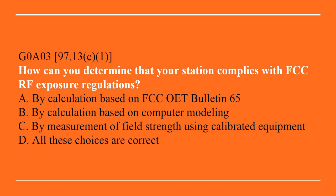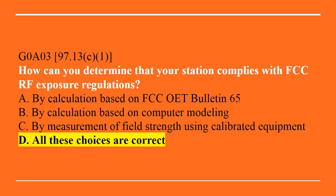G0A03: How can you determine that your station complies with FCC RF exposure regulations? A, by calculation based on FCC OET Bulletin 65. B, by calculation based on computer modeling. C, by measurement of field strength using calibrated equipment. Or D, all of these choices are correct. Answer is D — all of these choices are correct.